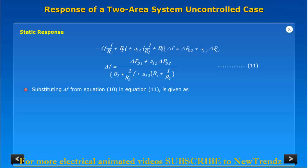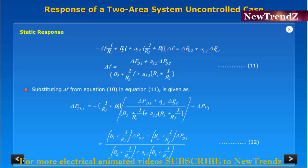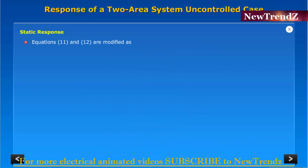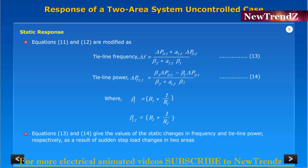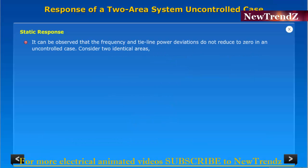Equations 11 and 12 are modified as equations 13 and 14, which view the values of the static changes in frequency and tie-line power respectively as a result of sudden step load changes in two areas. It can be observed that the frequency and tie-line power deviations do not reduce to zero in an uncontrolled case.